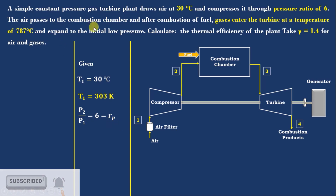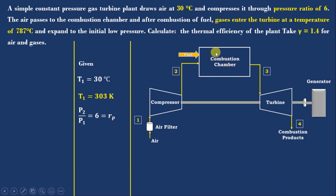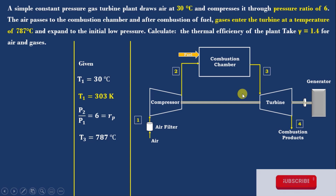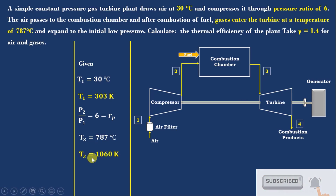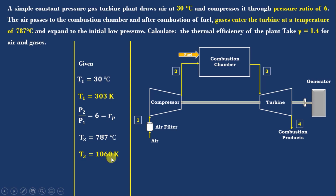Air then passes through the combustion chamber, and after combustion of fuel, gases enter at a temperature of 787°C — that is T3 = 787°C. Converting to kelvin: T3 = 1060 K. The air then expands to low pressure. Calculate the thermal efficiency of the plant; take gamma = 1.4 for gas and air.